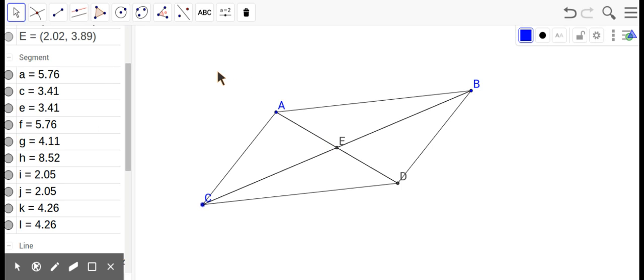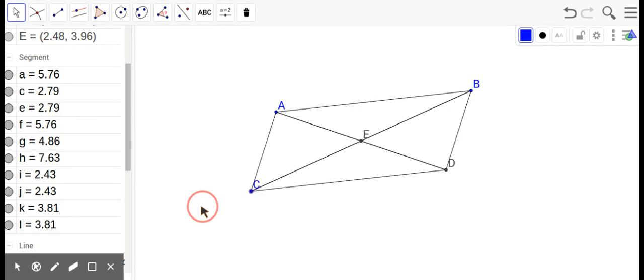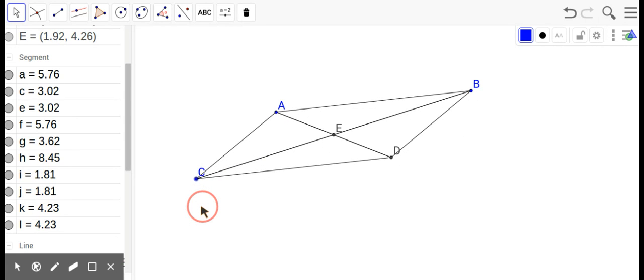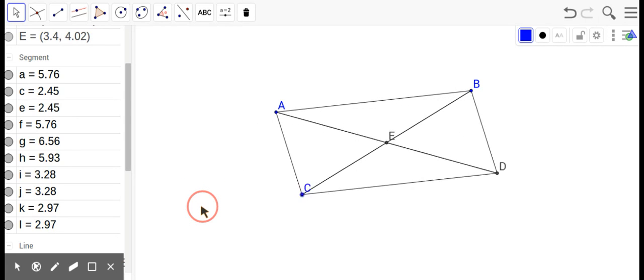So, those are your properties of a... Oh, they look like they're cutting the angles in half. Let's peek at that. No, not cutting the angles in half. So, they're not angle bisectors. They just bisect each other.